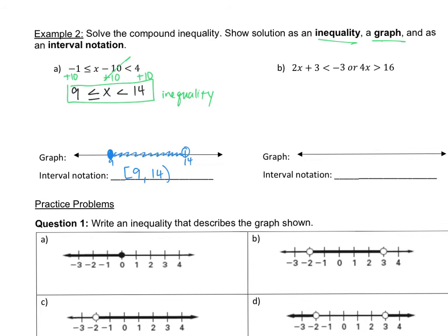Now this one here has an or. When you have an or, just solve them like two separate inequalities. This one here, let's do that one first. We'll need to get this x by itself. So I need to move the 3 over first.